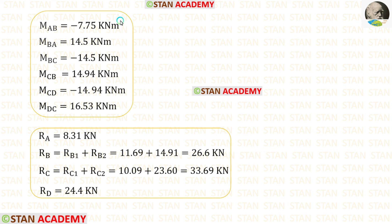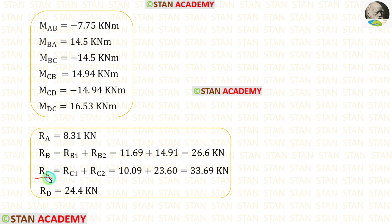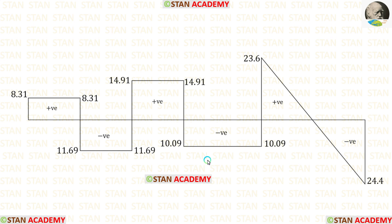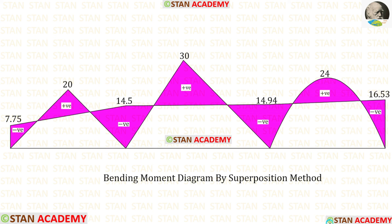In this analysis, we have calculated all the moments. To get RB, we add RB1 and RB2 to get 26.6 kN. You can see the shear force diagram and the bending moment diagram drawn by the superposition method. I have analyzed this beam using the slope deflection method, moment distribution method, stiffness matrix method, and Kani's method — all links are given below. Thank you for watching this video.